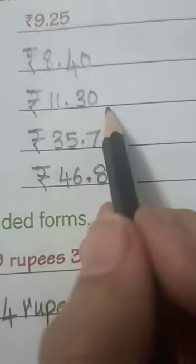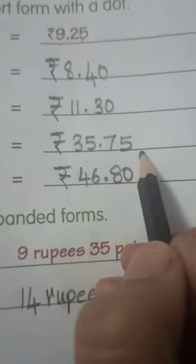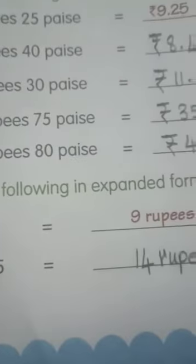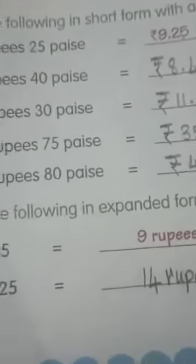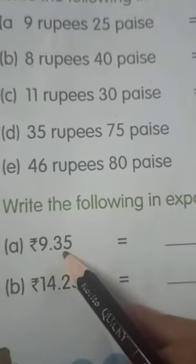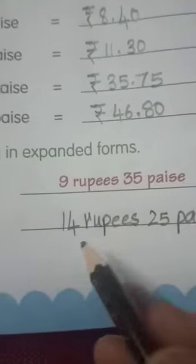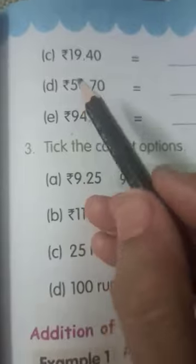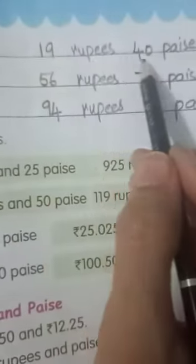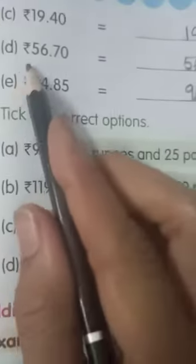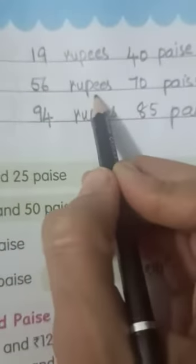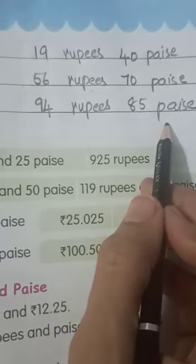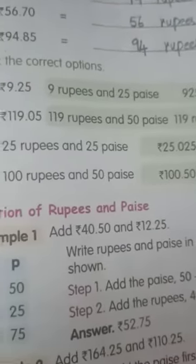Similarly: 11 rupees and 30 paise; 35 rupees and 75 paise; 46 rupees and 80 paise. Next, we have to write the expanded form. Expanded form means we write these in long form — for example, 9 rupees and 35 paise. Then 14 rupees and 25 paise; 19 rupees and 40 paise; 56 rupees and 70 paise; and 94 rupees and 85 paise.